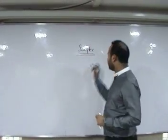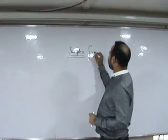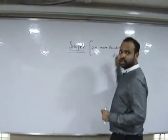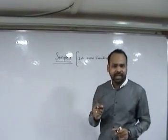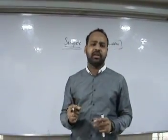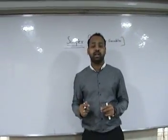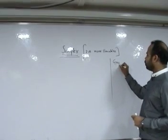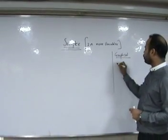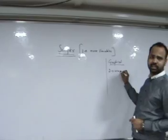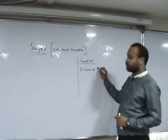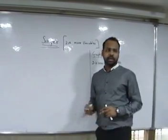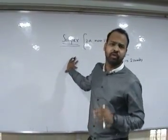Simplex method is applicable when you have two or more variables. On the other hand, the graphical method has a limitation — it can be used only when there are two variables. The reason is quite obvious: under the graphical method, we use only two axes. Obviously, when you use only two axes on a two-dimensional paper, you will not be able to represent more than two variables. That is why we have the simplex method, which can be used for two or more variables.